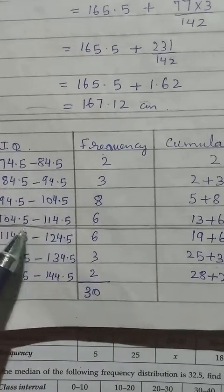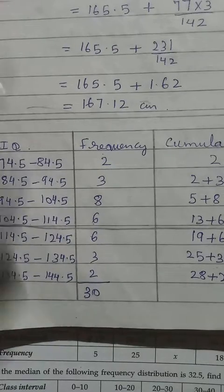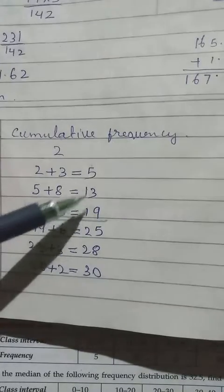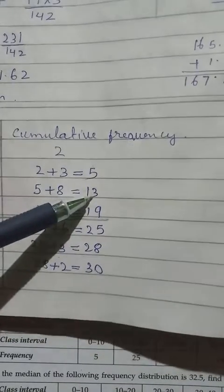So the lower limit will be 104.5. H will be this one minus this one. Then F will be 6. C will be the cumulative frequency before median class. It will become 13.